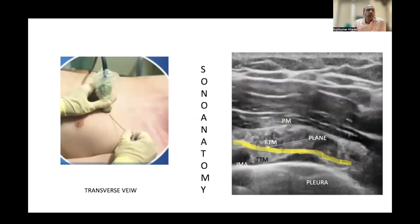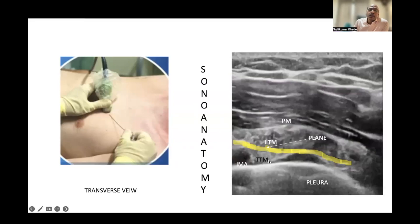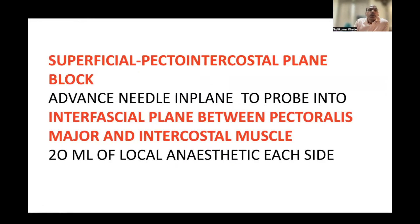This is a transverse view: the probe is positioned lateral to the sternum in transverse position and the needle is placed in-line with the transducer. This is the sonoanatomy — this is the pleura, these are the mammary vessels, this is the transverse thoracic muscle, and this is the internal intercostal muscle. The needle is advanced into the plane between these two muscles.